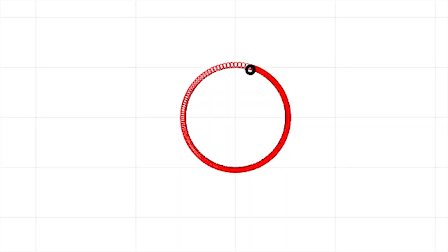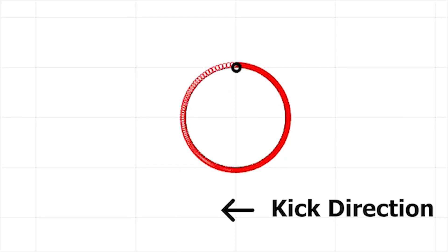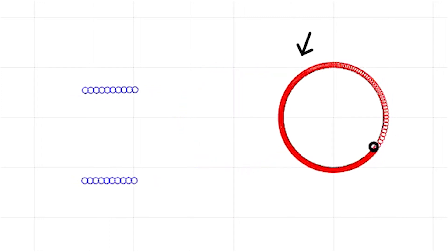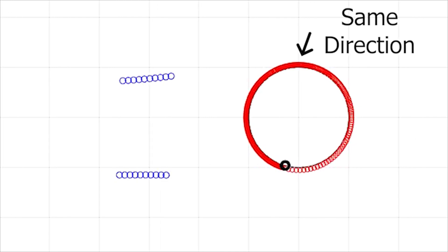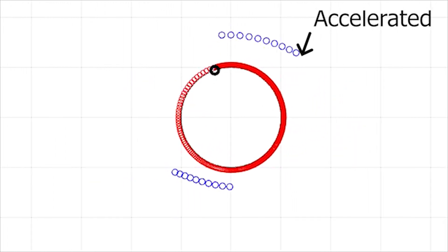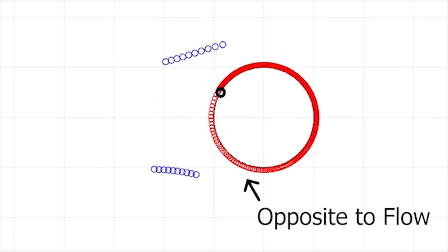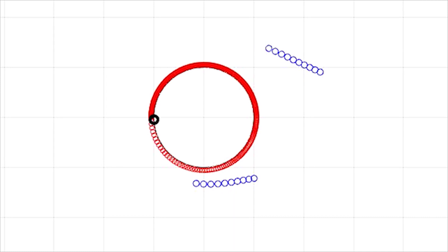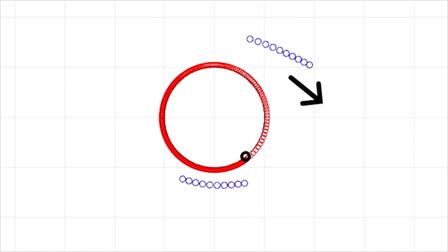When a spinning ball is moving through the air, friction causes the air around the ball to be dragged along with it. When the oncoming flow meets the football, the side which is moving in the same direction as the spinning ball is accelerated, follows the curve and is deflected, while the side that is moving against the spinning ball slows down and keeps moving straight. Since the air has been deflected, according to Newton's third law, the ball is deflected in the opposite direction. This is called the Magnus effect.